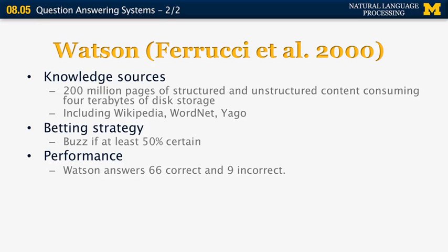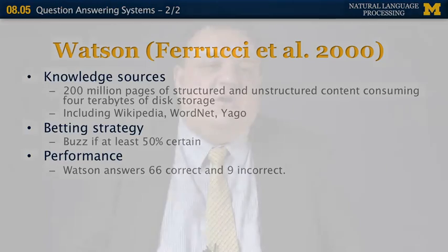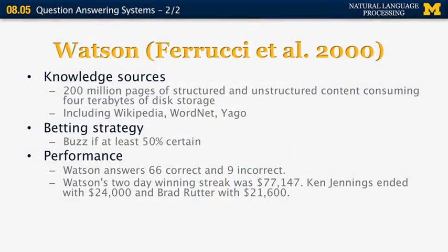How well did Watson do? It was supposed to answer about 75 questions. It got 66 of them correct and nine wrong. The most famous incorrect answer was in the category of US cities — the question was about which city has two airports named after World War II, one named after a battle and one named after a person. Watson buzzed first and gave the answer 'Toronto,' which was incorrect — it apparently missed the fact that the category was US cities. The correct answer was Chicago, with Midway and O'Hare. Even with nine incorrect answers, Watson still managed to win the game by a huge margin.